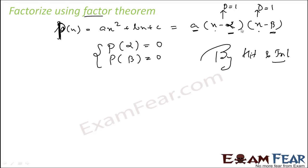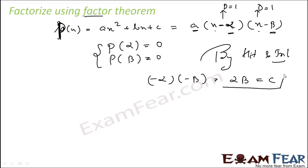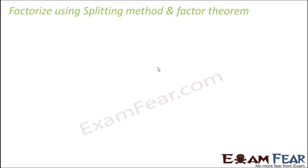One point we know is that (−α)·(−β) = αβ, and that value equals c. So this is a pointer which helps us find the value of α and β very easily — if we know α, we can easily find β. Let's take one example and factorize using both the splitting method and the factor theorem method.